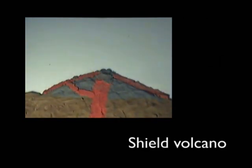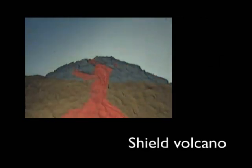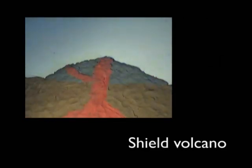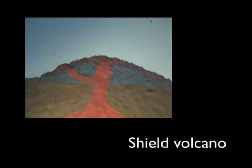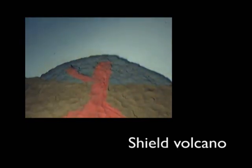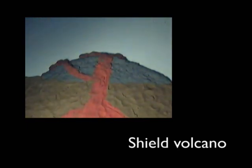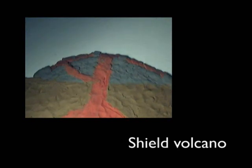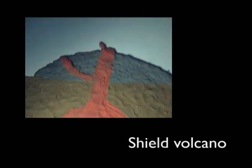Shield volcanoes are often found at constructive boundaries. These volcanoes have shallow slopes because the lava is runny and therefore runs away from the crater before cooling.